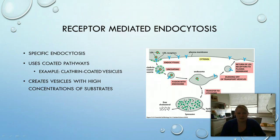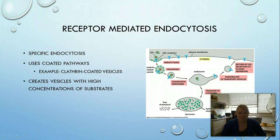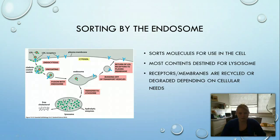The third type is receptor-mediated endocytosis, which is very specific — unlike the other two, which are non-specific. Receptors are present in clathrin-coated pits, and these receptors bind to their target molecule, then bud off in clathrin-coated vesicles and head to the endosome for sorting. This brings in high concentrations of whatever substrate the cell specifically needs. After being brought in, molecules are sent to the endosome, which sorts them and determines where they need to go and what they need to do.